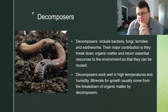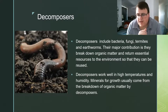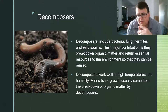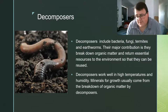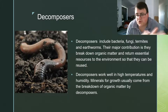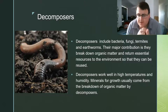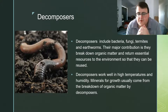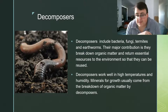Decomposers - I told you we'd get back to those. Decomposers include things like bacteria, fungi, termites, and earthworms. Their major contribution to an ecosystem is breaking down organic matter and returning those resources back to the environment so they can be reused. Nutrients are never lost from an ecosystem - they're only recycled - whereas energy is lost as you move up a food chain. Decomposers generally work well in high temperatures and in humid environments. They'll basically use the minerals for growth and then break down organic matter, returning it to the soil where it originally came from. And then the whole process starts again.